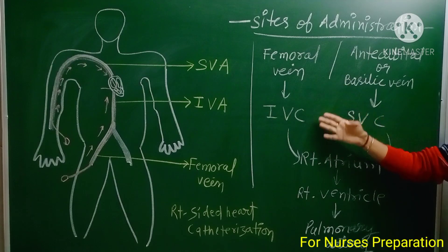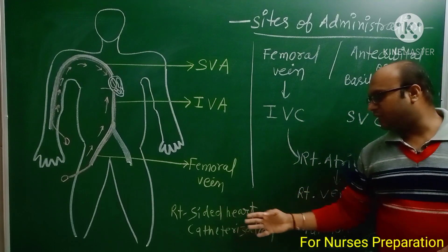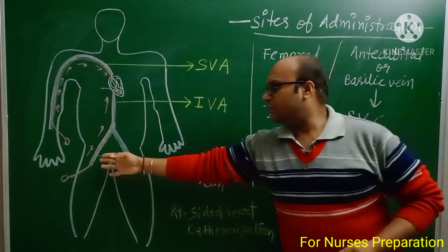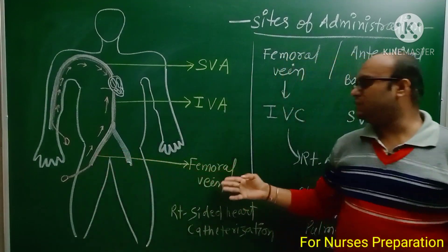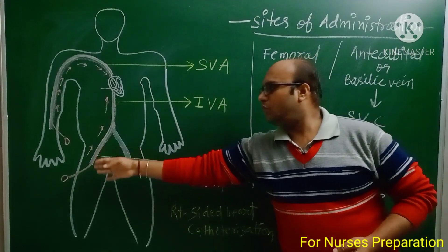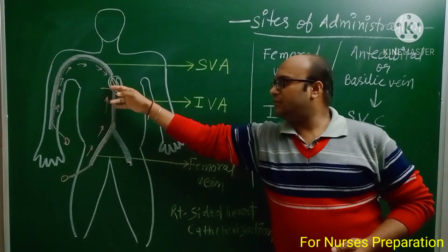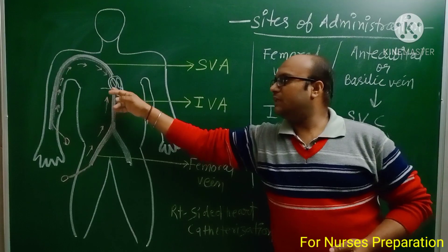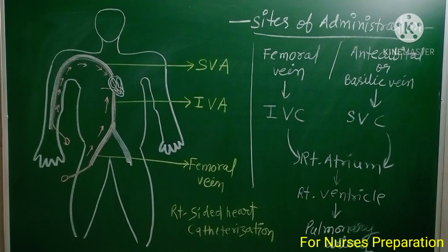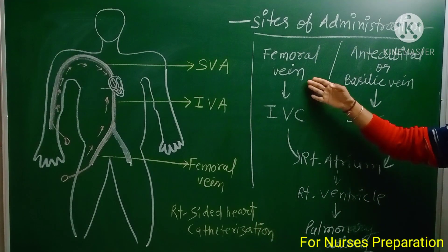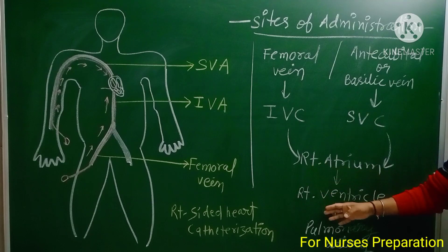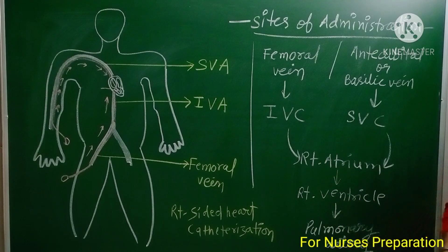For right-side heart catheterization, the first site is the femoral vein. The catheter is inserted via the right femoral vein. From there it travels to the inferior vena cava, then to the right atrium, then to the right ventricle, and finally into the pulmonary artery.